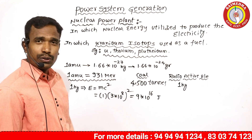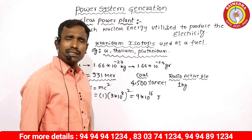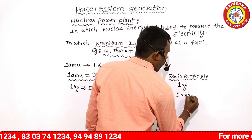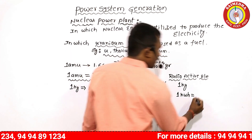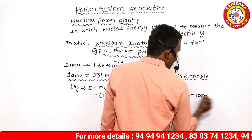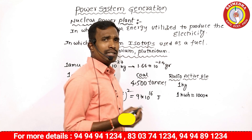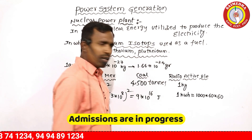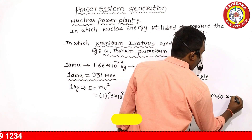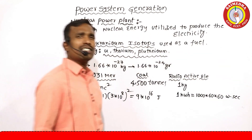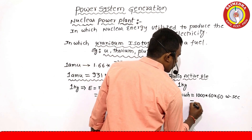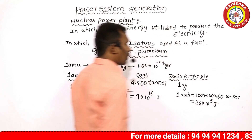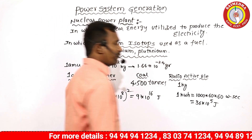9 × 10¹⁶ joules of energy is produced. To convert joules to kilowatt hours: 1 kilowatt hour equals 1000 watts × hours. Hours converted to seconds: 60 minutes × 60 seconds. So 1 kilowatt hour equals 36 × 10⁵ joules.